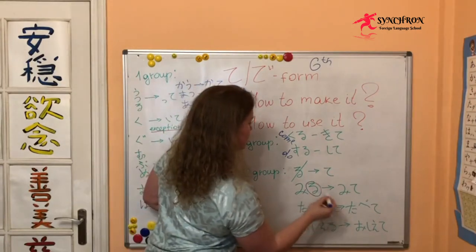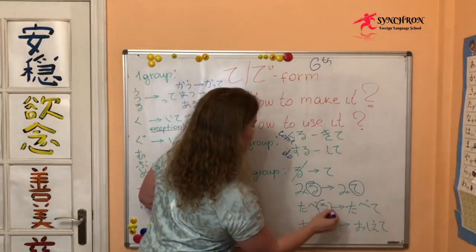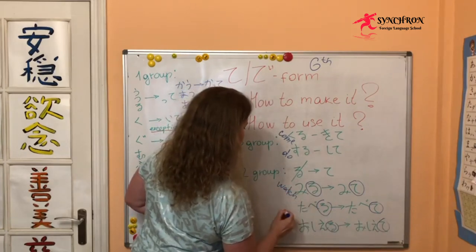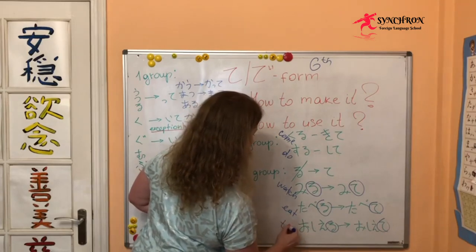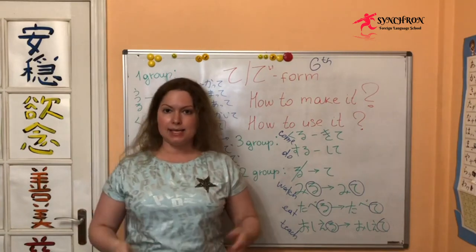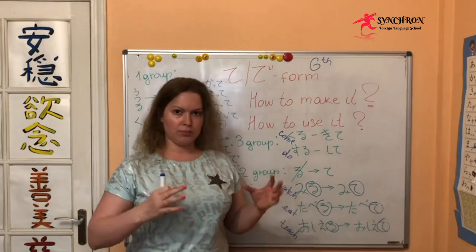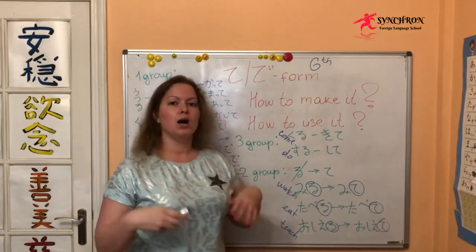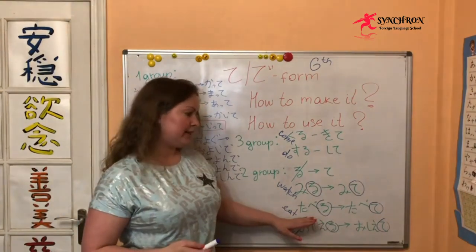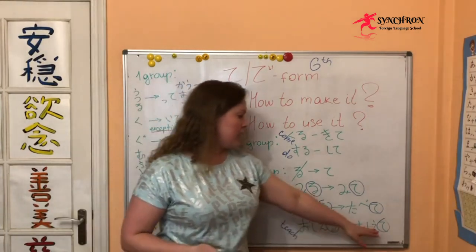We just take る and change it into て: 食べる → 食べて, 教える → 教えて, みる → みて. For example, the grammar construction 'please do something' in a polite way: みて ください (please watch/look at something), 食べて ください (please eat), 教えて ください (please teach me or let me know something).